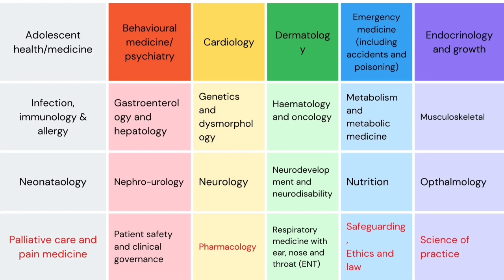Our syllabus consists of the following subspecialties: adolescent health and medicine, behavioral medicine and psychiatry, cardiology, dermatology, emergency medicine including accident and poisoning, endocrinology and growth, infection, immunology and allergy, gastroenterology and hepatology, genetics and dysmorphology, hematology and oncology, metabolism and metabolic medicine, musculoskeletal, neonatology, nephro-urology, neurology, neurodevelopment and neurodisability, nutrition, ophthalmology, palliative care and pain medicine, patient safety and clinical governance, pharmacology, respiratory medicine with ear, nose and throat, safeguarding, ethics and law, and science of practice.